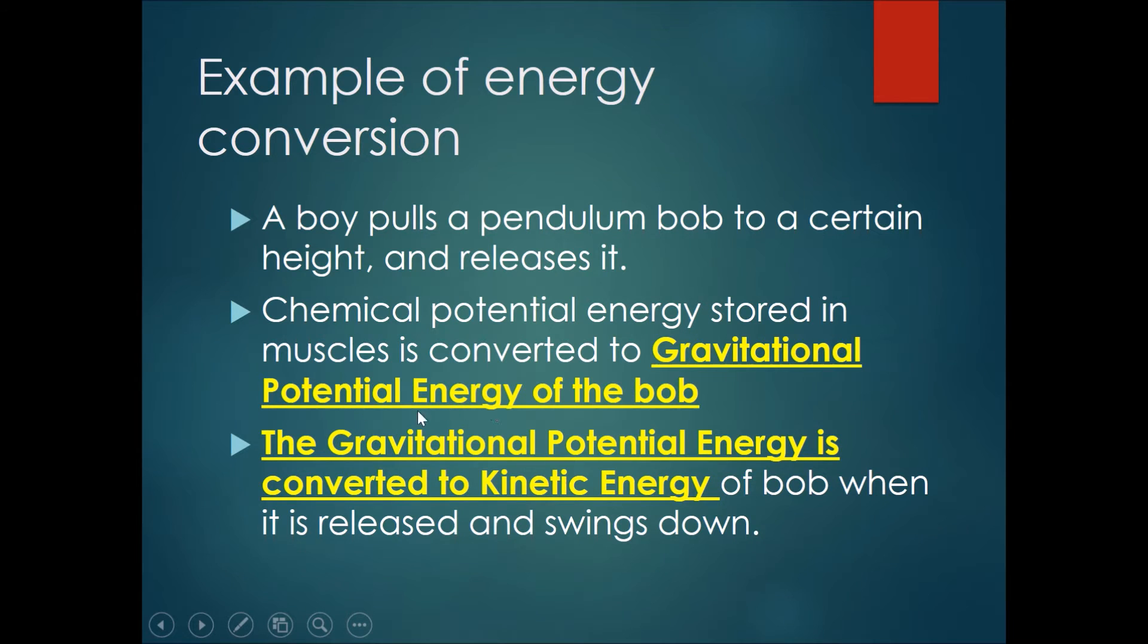Next, once he releases the bob, the bob will start swinging down. This gravitational potential energy is converted to the kinetic energy of the bob. The energy that it had based on its height is now converted into the energy it has based on its speed.